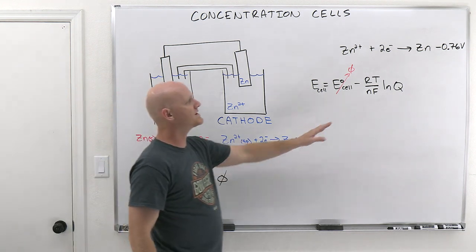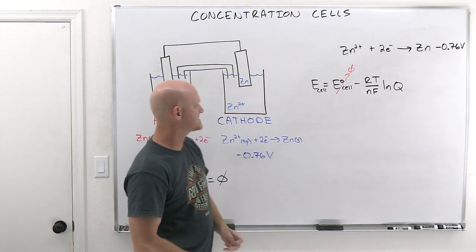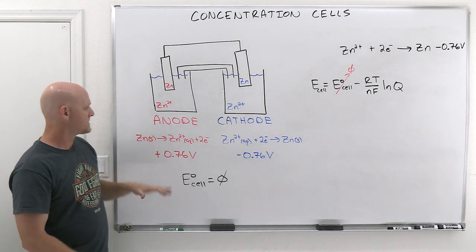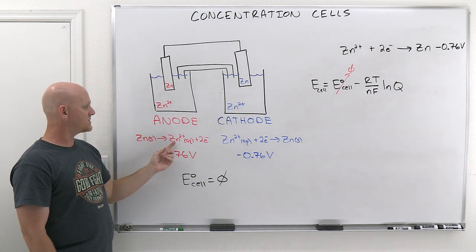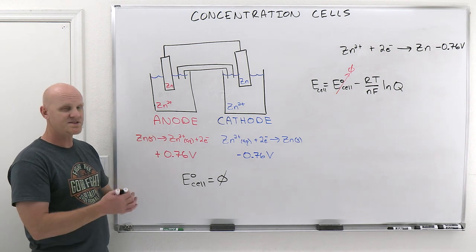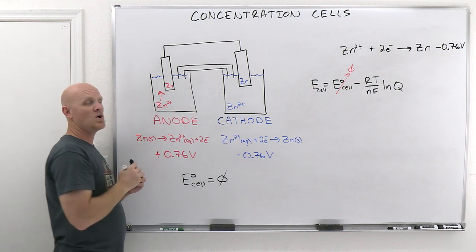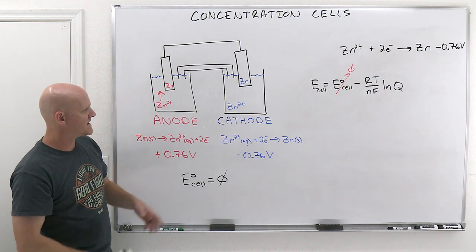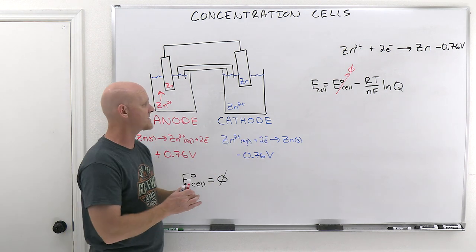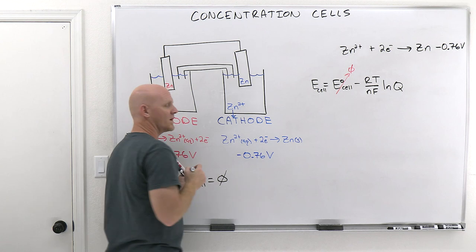All right, so it all is really going to come down to that second half of the Nernst equation, that fudge factor, where this is going to work out. So if we take a look at what's really going on here, if we combine these two, so in this one right here, notice in the anode, zinc two plus is the product. And so over time, you're going to make more and more zinc two plus, and so over time, this concentration is going to go up. So on the other side though, zinc two plus in the cathode is the reactant, it's getting consumed in the reaction. And so over time, its concentration is going to go down.